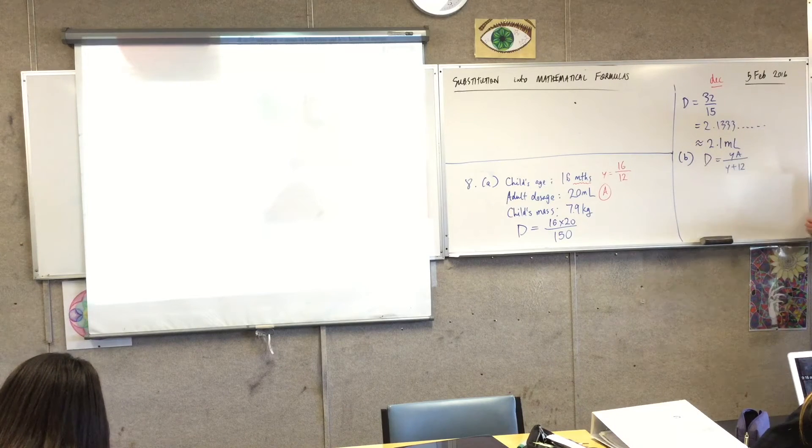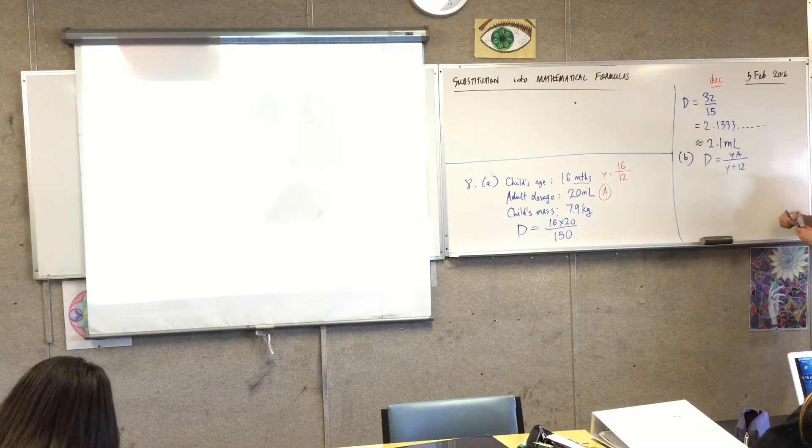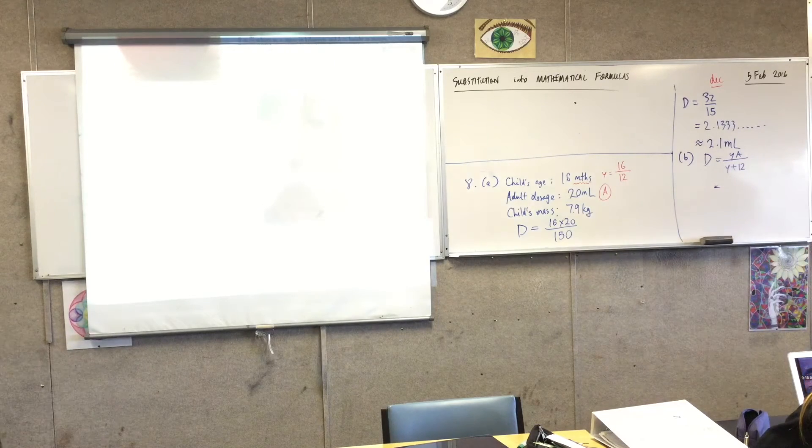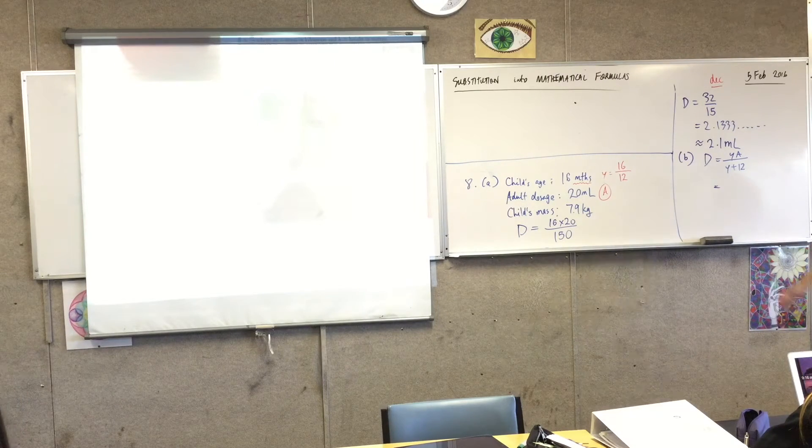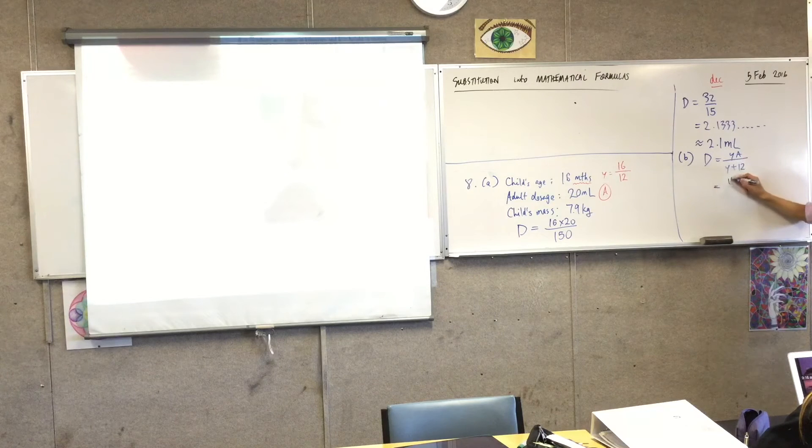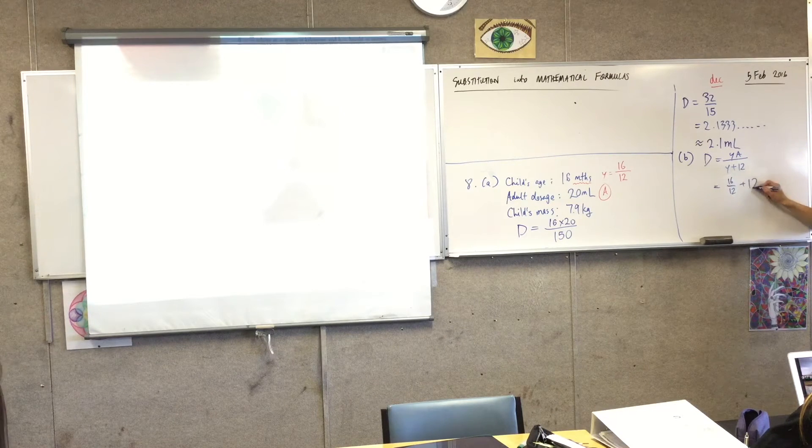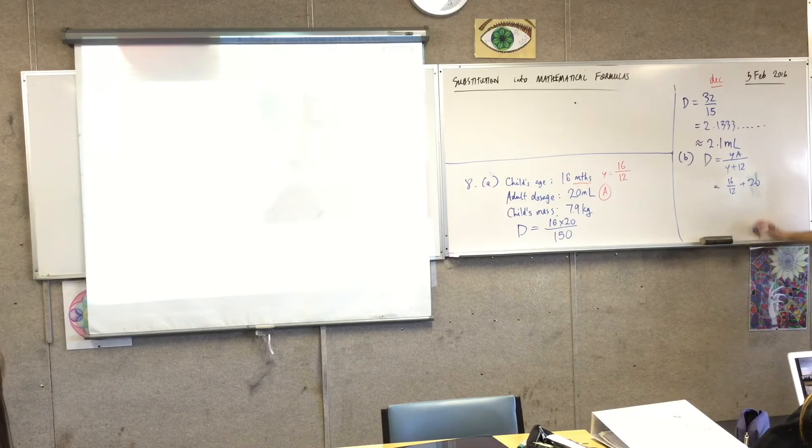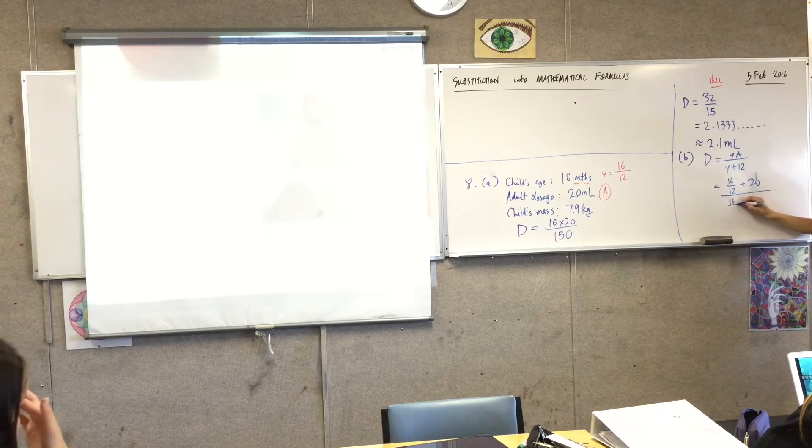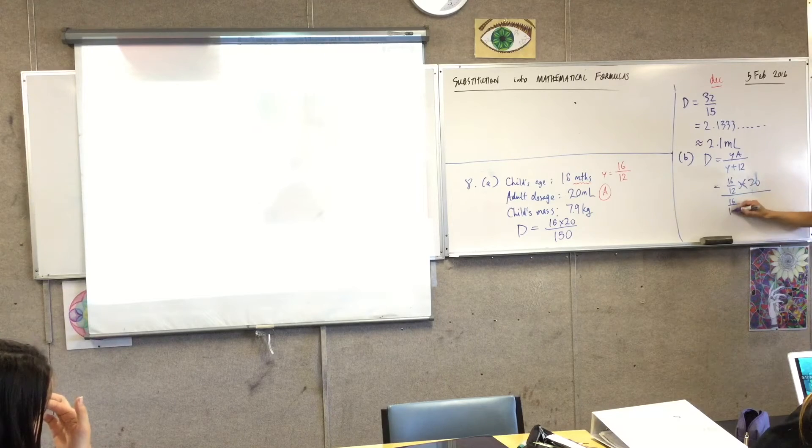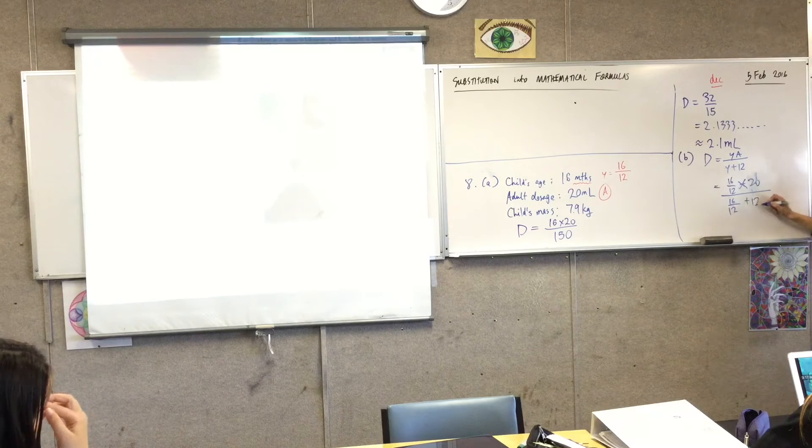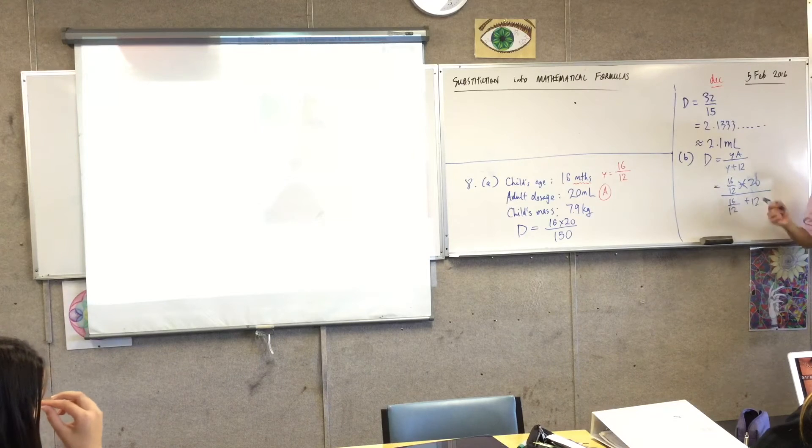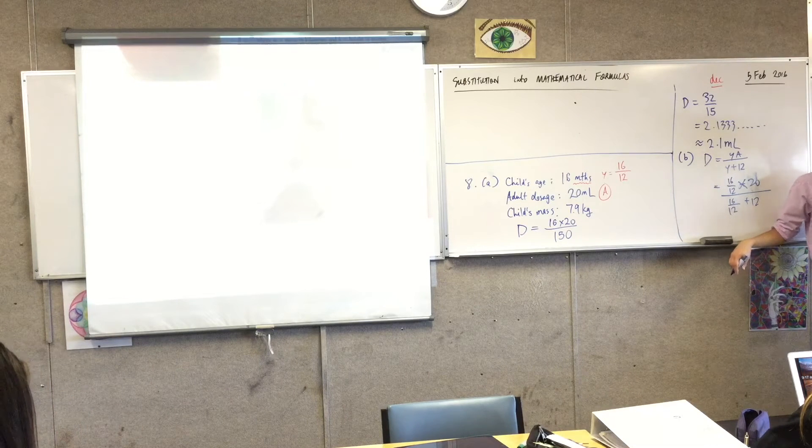So pay careful attention when you put these in. When you're evaluating this, and I'm just going to put the actual, just straight substitution before I get to my calculator. This one here is 16 over 12 plus 12. Sorry, that's 20. Beg your pardon. That's the adult dosage. And on the denominator, I have that 16 over times. I have 16 over 12 again, plus 12. I was doing the denominator first. Okay? So this is fine. I can put this into my calculator if I want. Bit of a royal mess though.